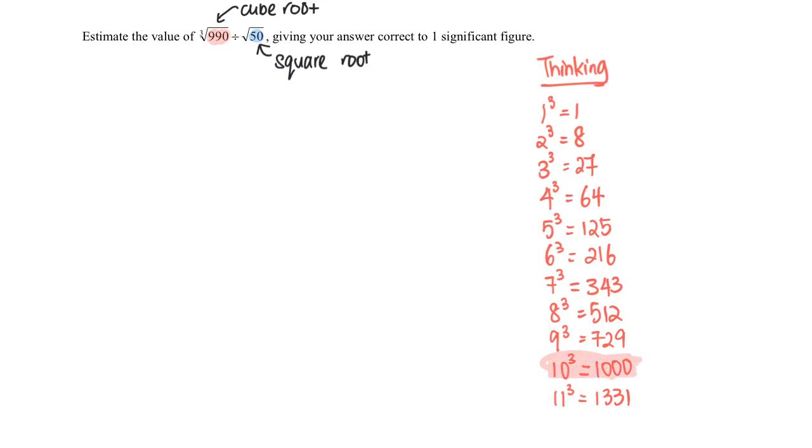And so now it's the working. Cube root of 990 times square root of 50, approximately will be equal to...